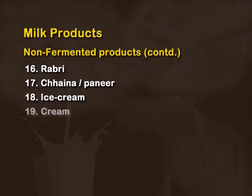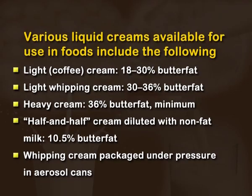Cream is used for making whipped cream for icing and toppings, as well as for adding to coffee. It is the high fat component separated from whole milk through the creaming process. Different concentrations of cream are used for different purposes: light coffee cream with 18 to 30 percent butter fat, light whipping cream with 30 to 36 percent, heavy cream with more than 36 percent fat, and half and half diluted with non-fat milk at 10.5 percent butter fat.